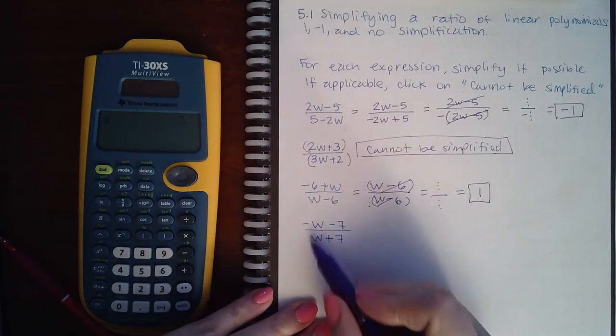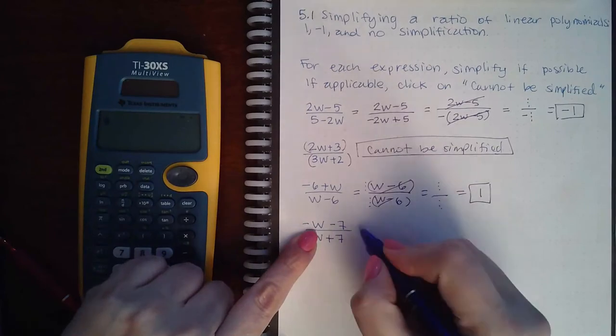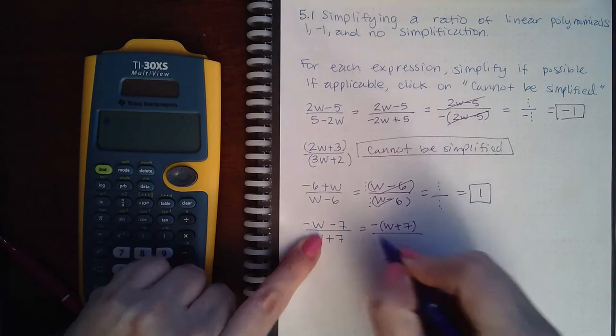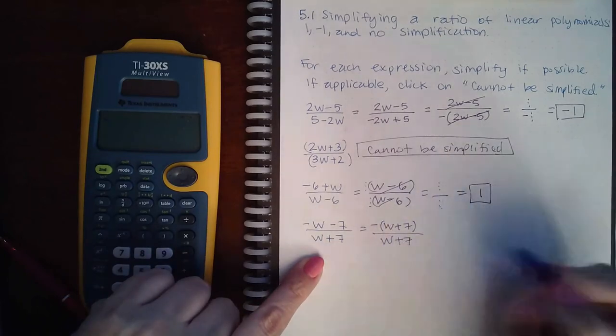Here, these are in order, but the front term is negative, so you must factor out the negative, leaving w plus 7. The denominator is also w plus 7.